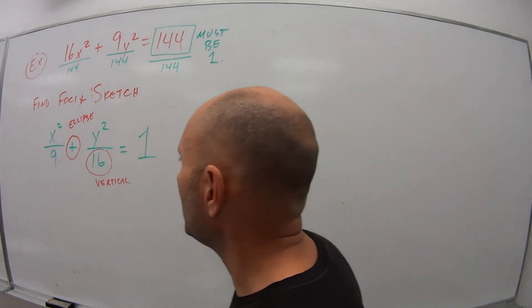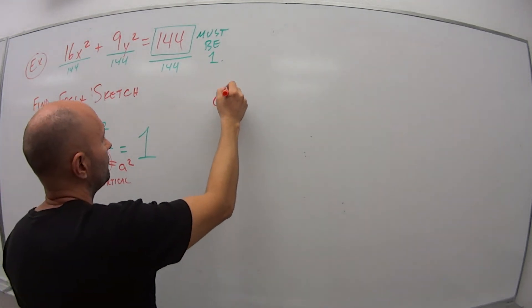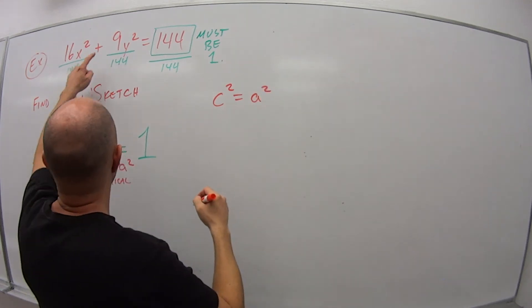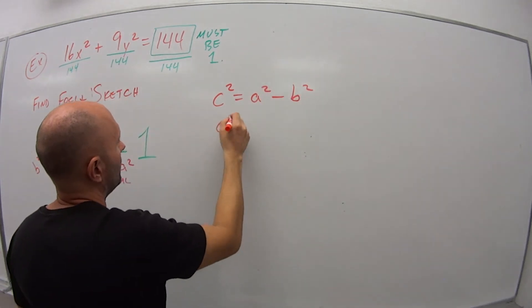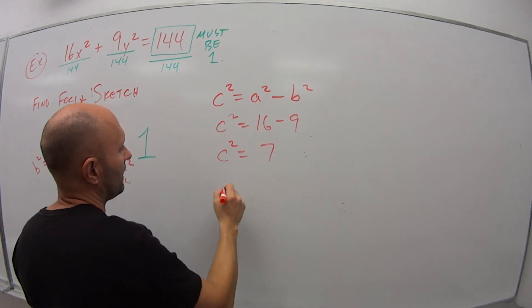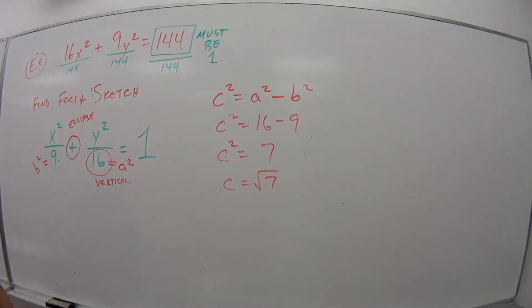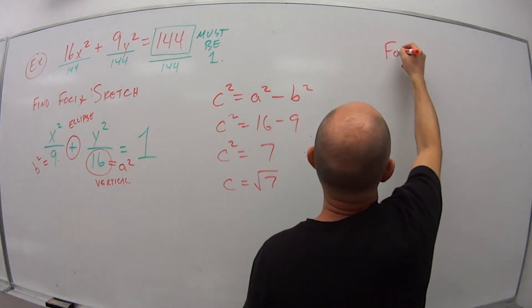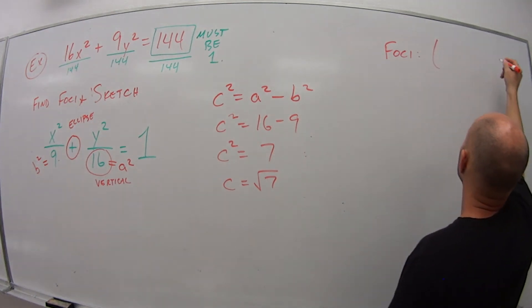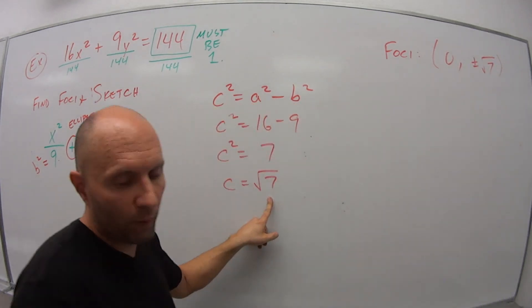Alright. Welcome back. So because the 16 is our bigger number, this is our a squared, which means that b squared is 9. So for our foci, c squared is a squared. Because this is plus minus b squared. So c squared is 16 minus 9. C squared is equal to 7. So c is the square root of 7. So the foci, because we know this is a vertical ellipse, my x value is 0. And then it's plus or minus c, so plus or minus square root of 7.